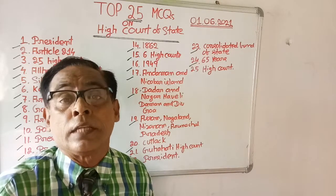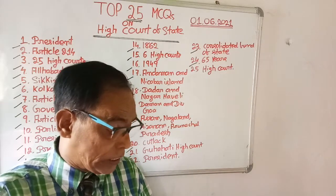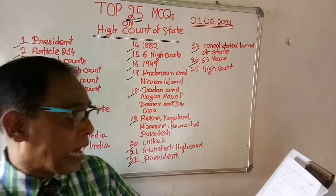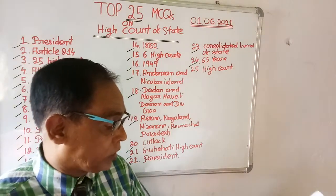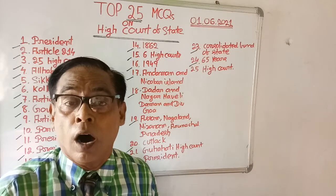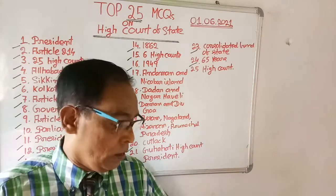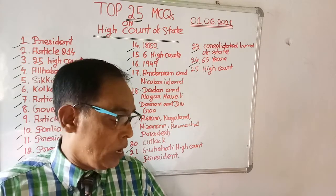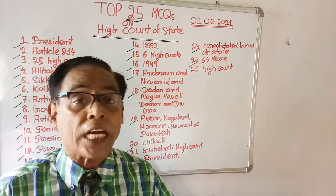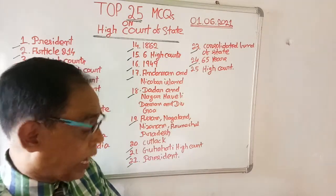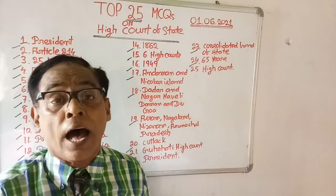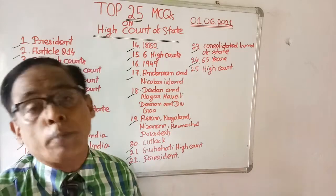Question number sixteen: Odisha High Court was established in which year? Options are: 1947, 1949, 1948, and 1950. The right answer is 1949 — in 1949, Odisha High Court was established.